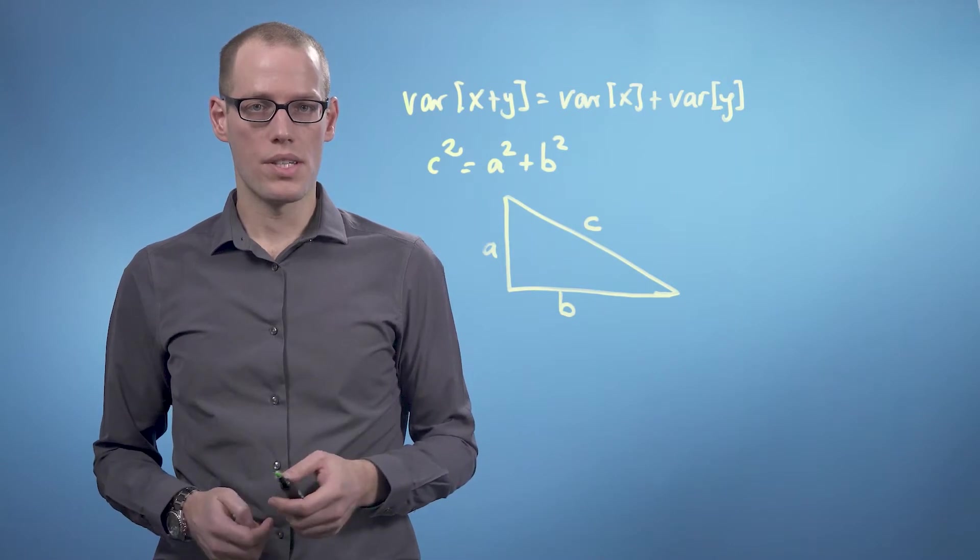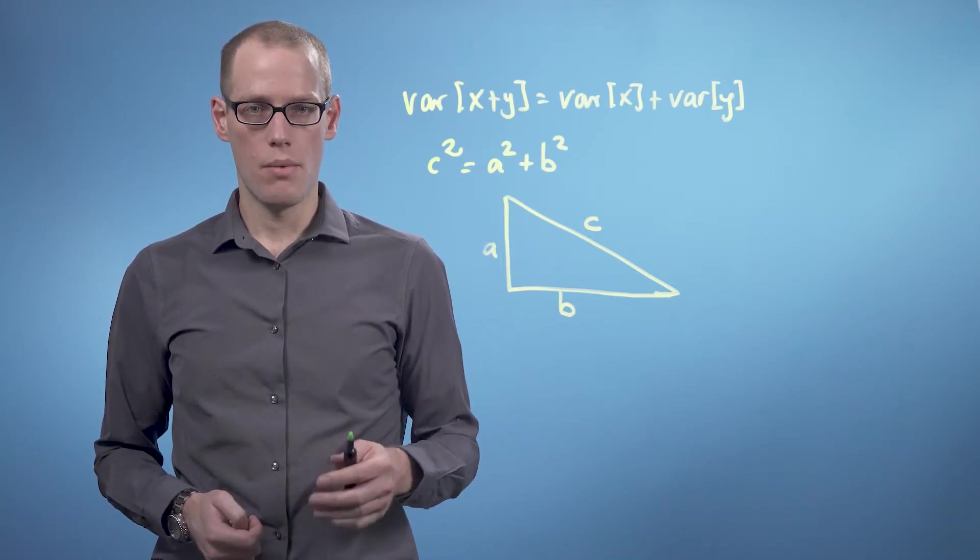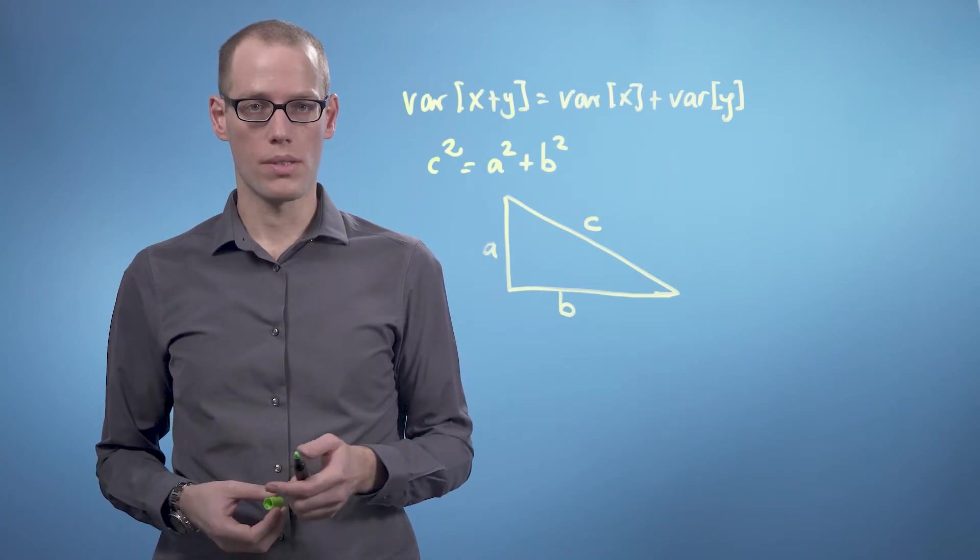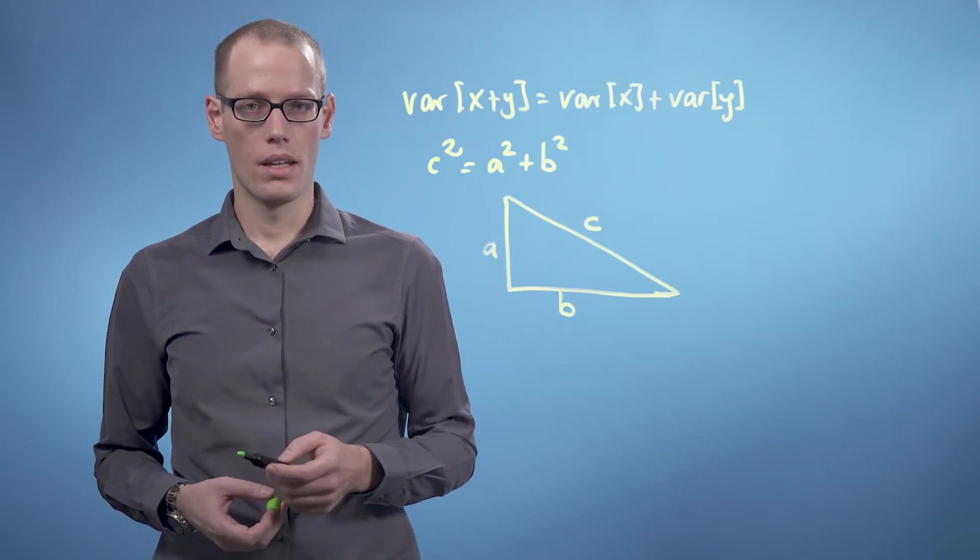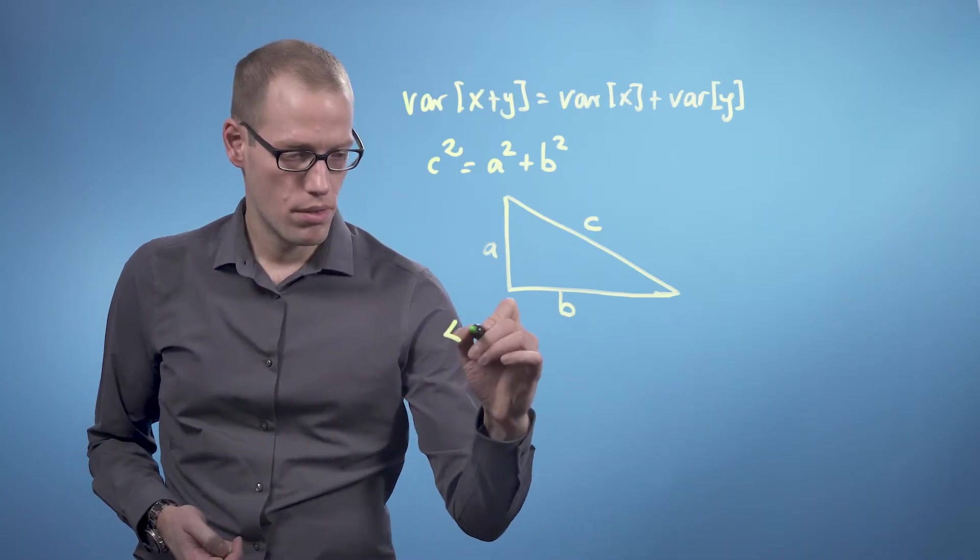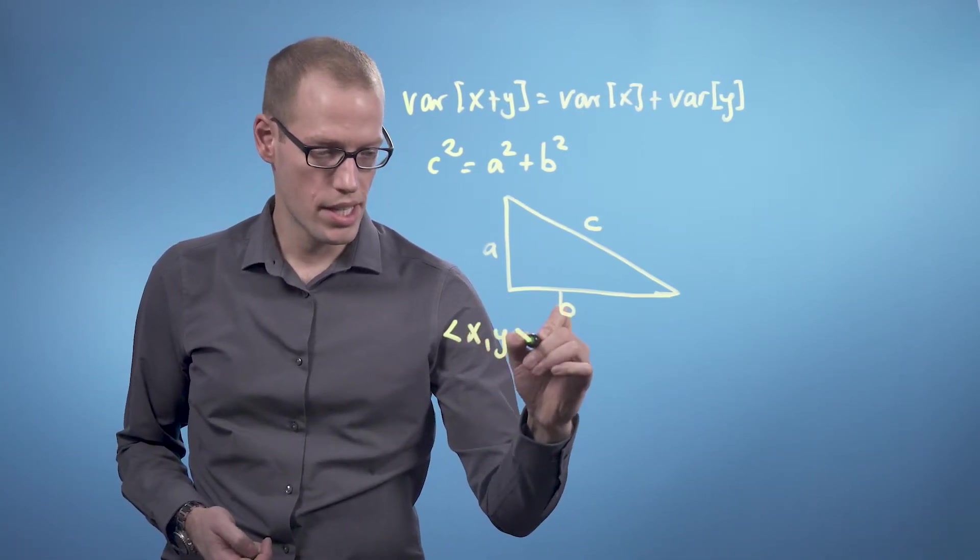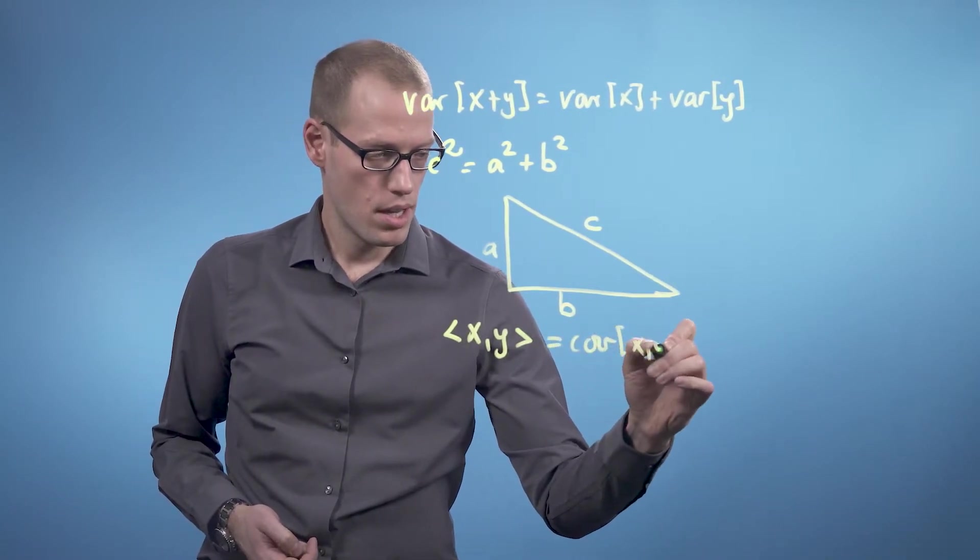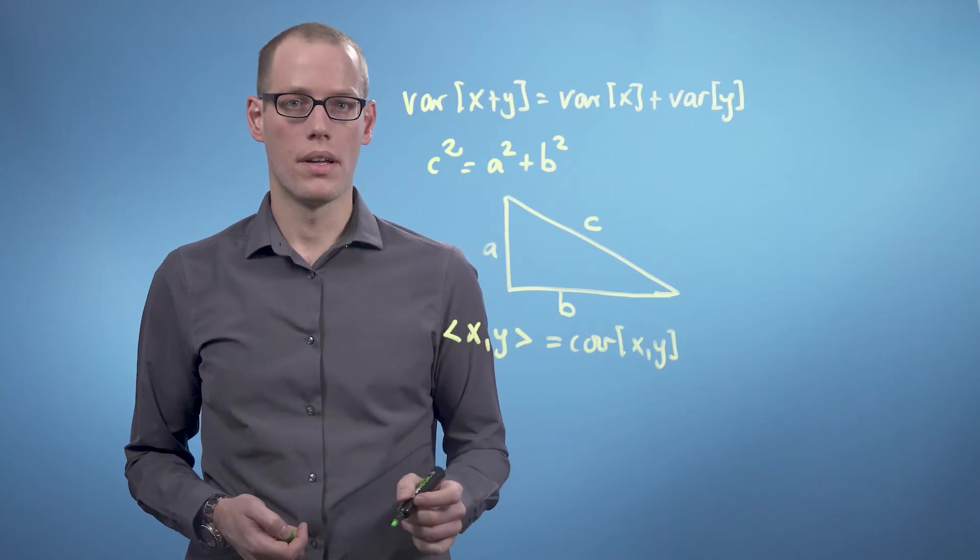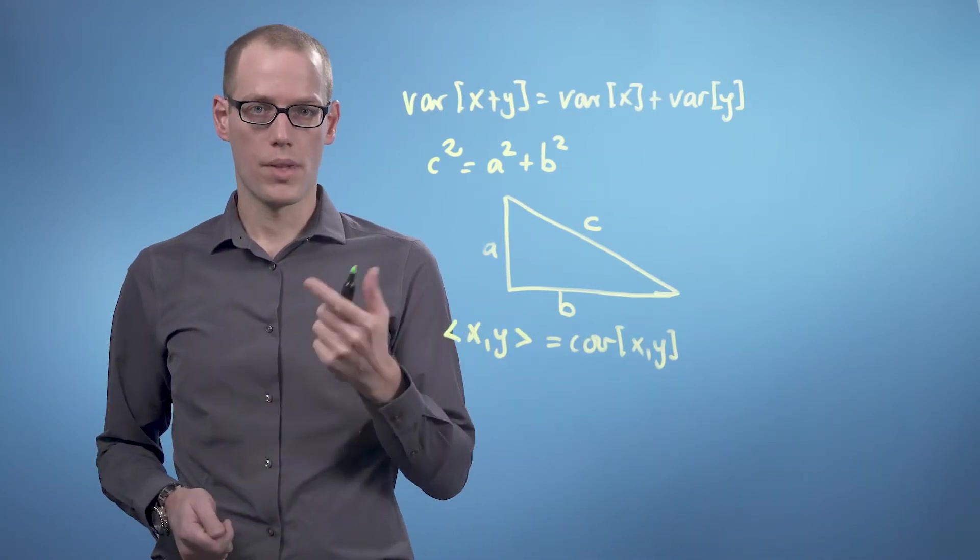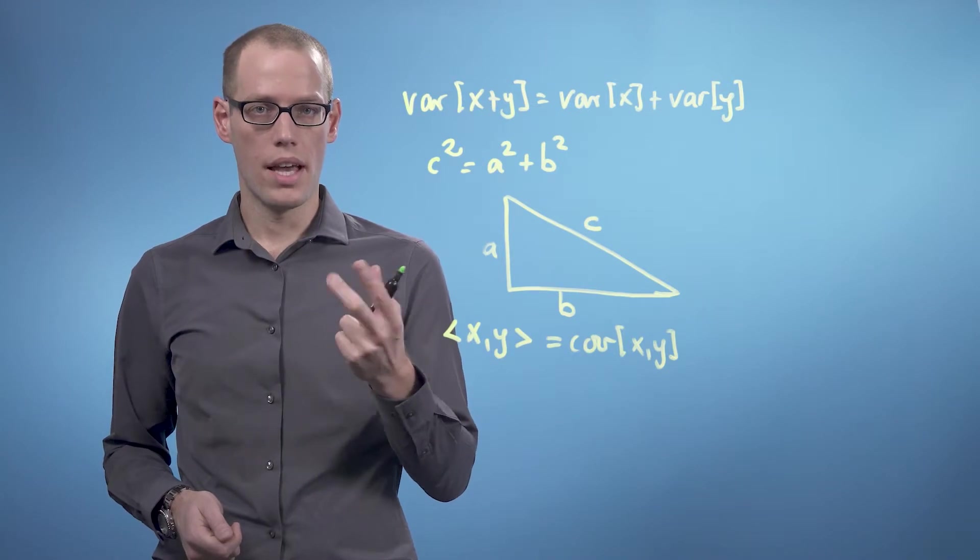Let's see whether we can find a geometric interpretation of the variance relation of uncorrelated random variables. Random variables can be considered vectors in a vector space, and we can define inner products to obtain geometric properties of these random variables. If we define the inner product between two random variables x and y to be the covariance between x and y, we see that the covariance is symmetric, positive definite, and linear.